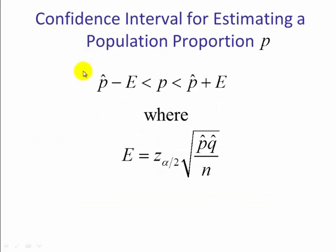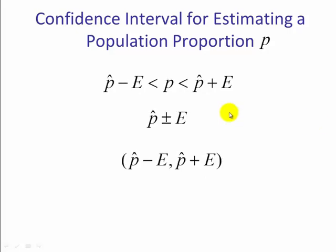Another way of writing confidence intervals is by using capital letter E, which represents our margin of error, z alpha over 2 times our standard error. Now if you ever see q, q is the same thing as 1 minus p.